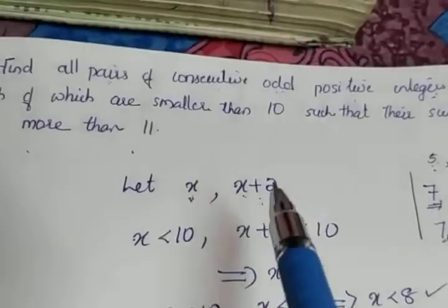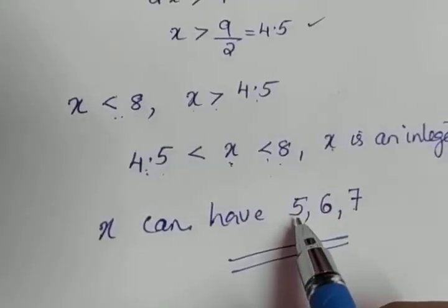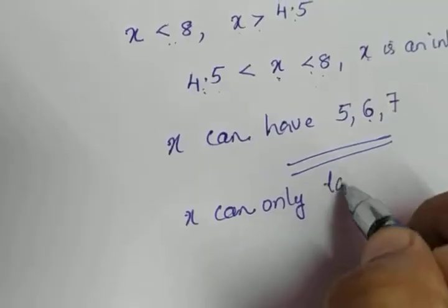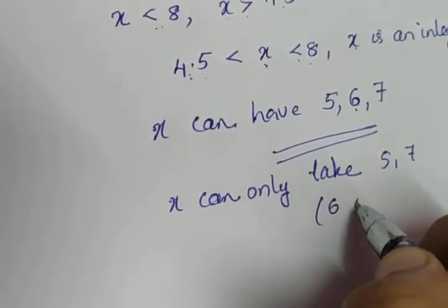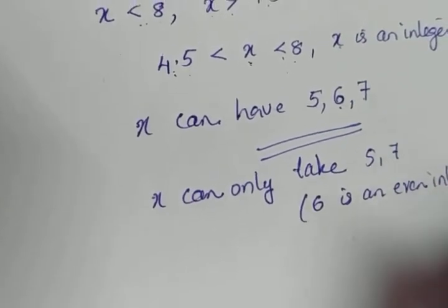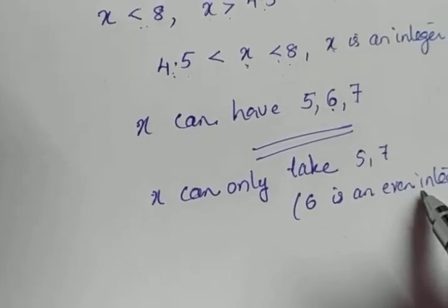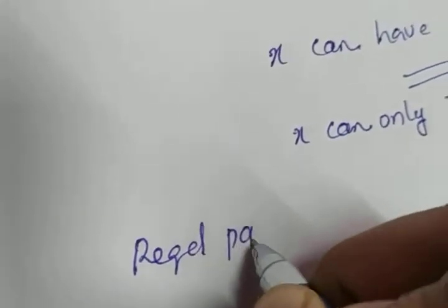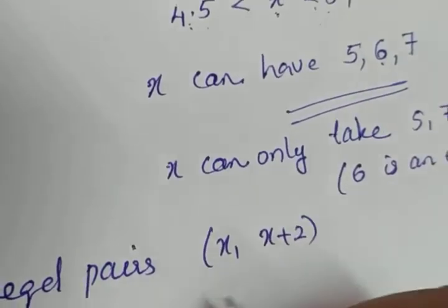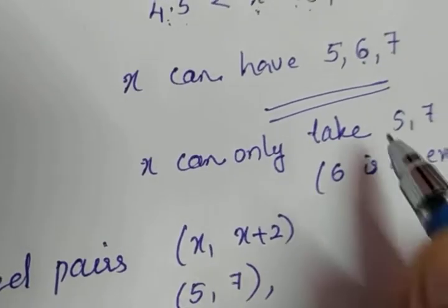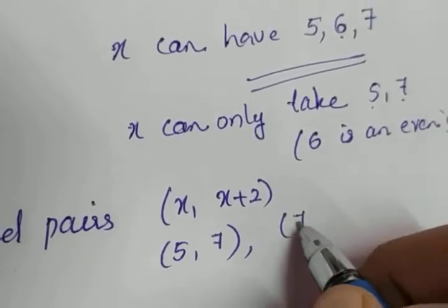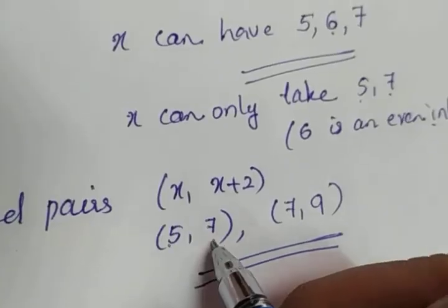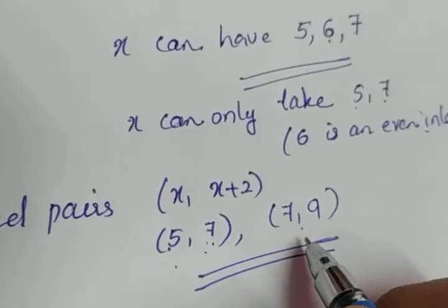But X is a positive odd integer. So can X take the value 6? No — 6 is an even integer, so we avoid it. X can only take the values 5 and 7. The required pairs are X and X plus 2. When X is 5, X plus 2 is 7. When X is 7, X plus 2 is 9. So the required pairs of consecutive odd positive integers in which both are smaller than 10 and the sum is more than 11 are: (5, 7) and (7, 9).